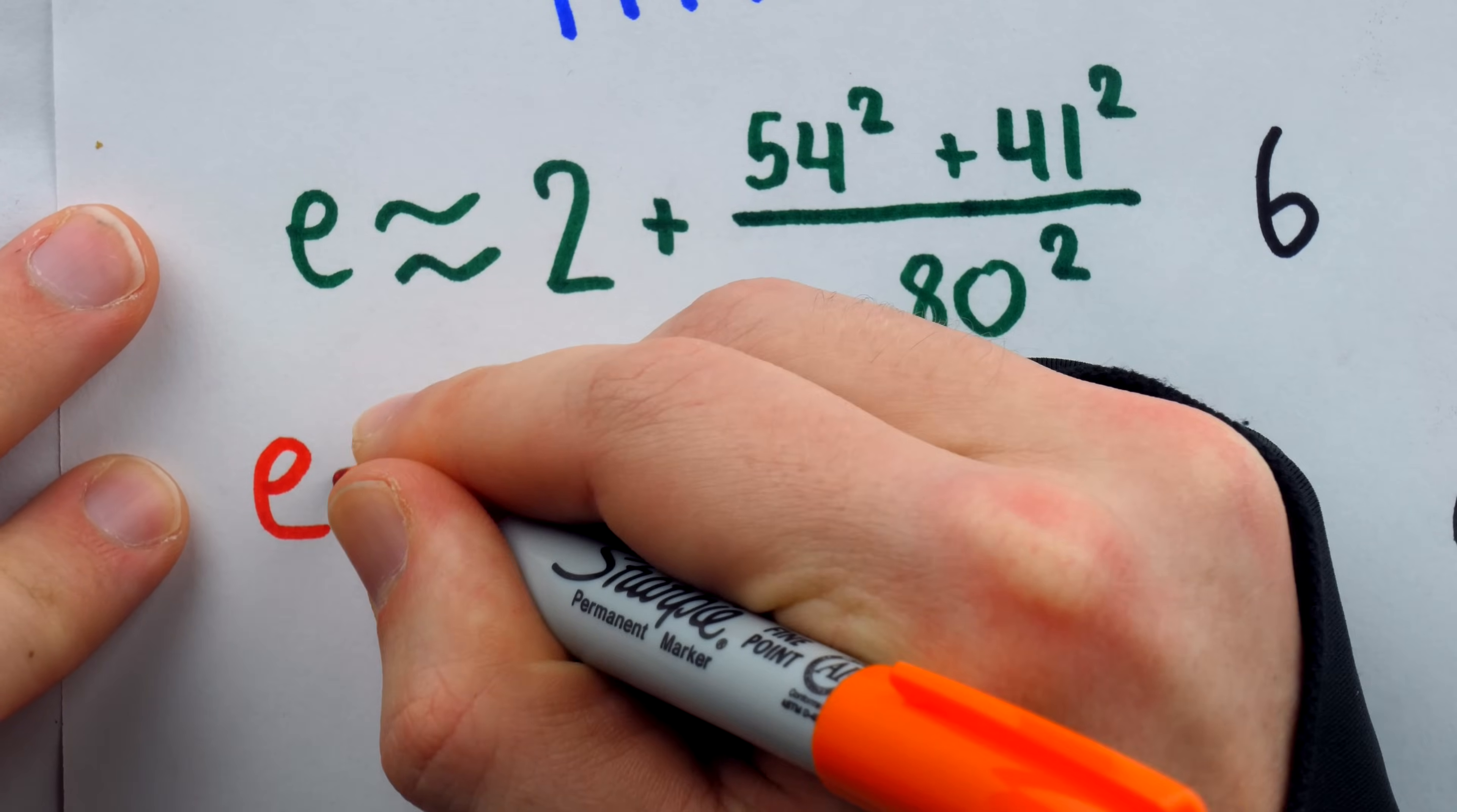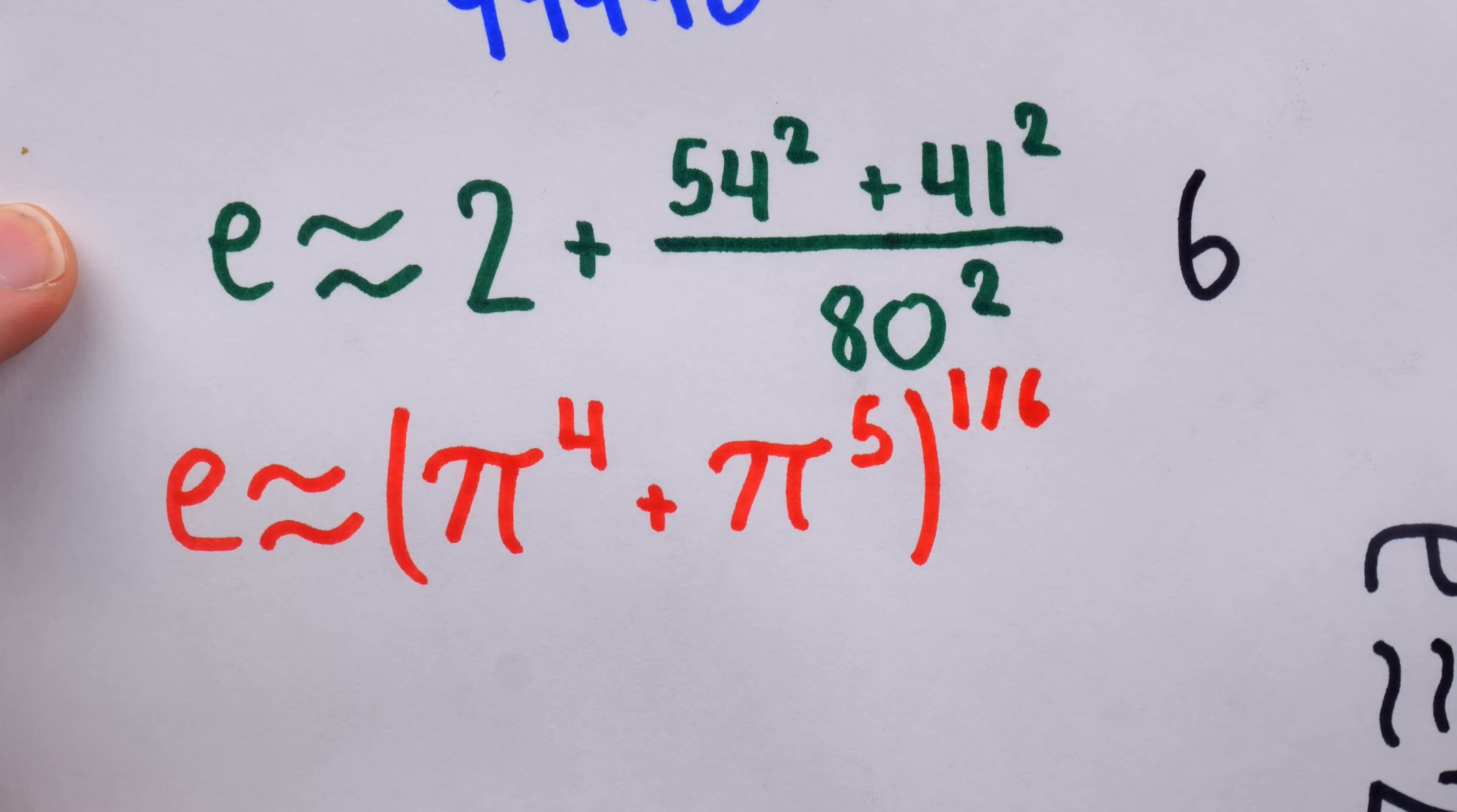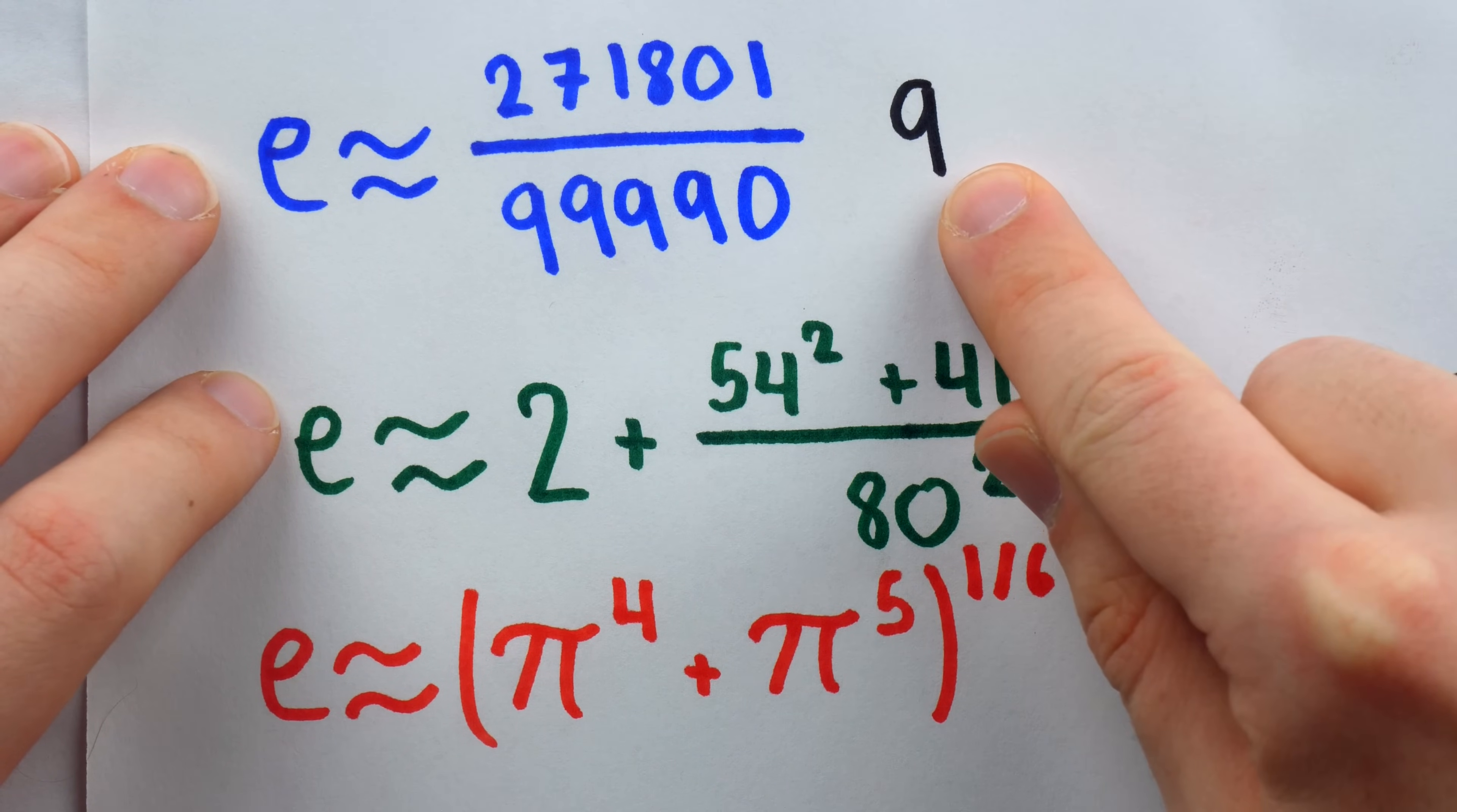If we want to get really cute, we can even use pi to approximate e. Indeed, e is approximately pi to the power of 4 plus pi to the power of 5 to the power of 1 over 6. This approximation of e is good for 7 decimal places. These are all fine approximations, but I want to show you what might be the coolest approximation for e, and it's a little bit more accurate than these ones.